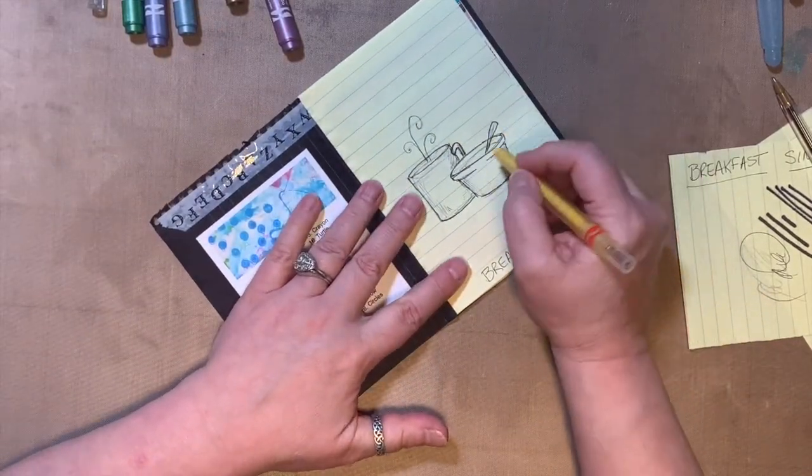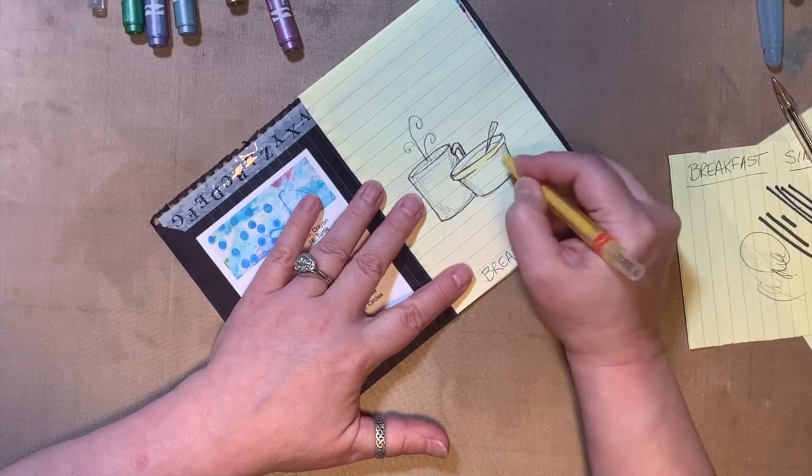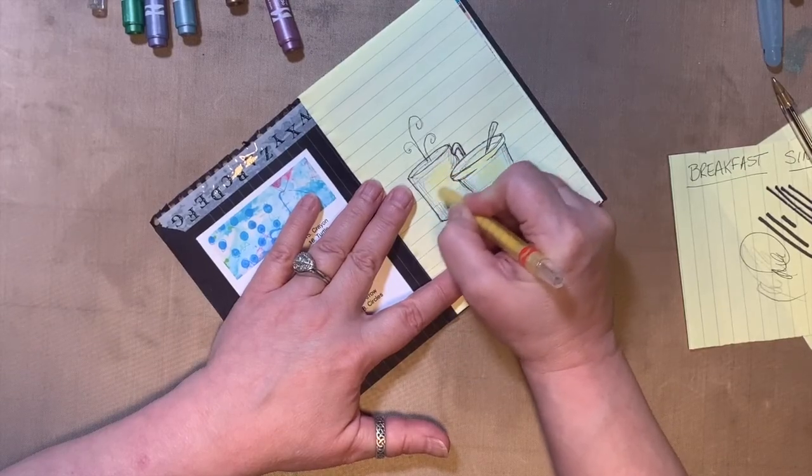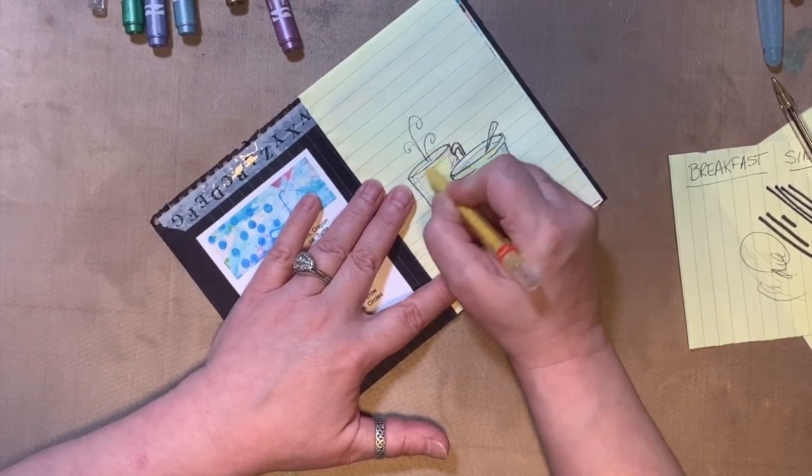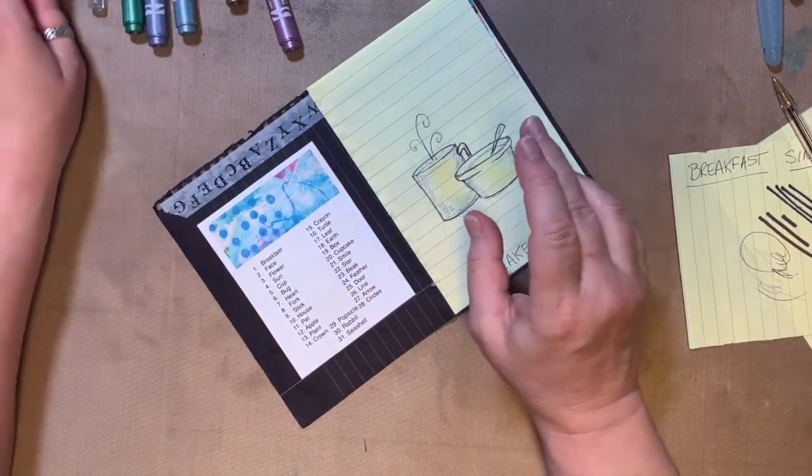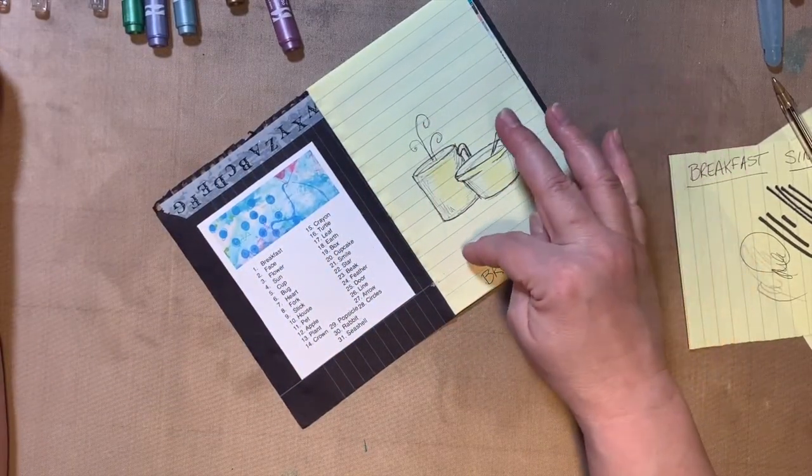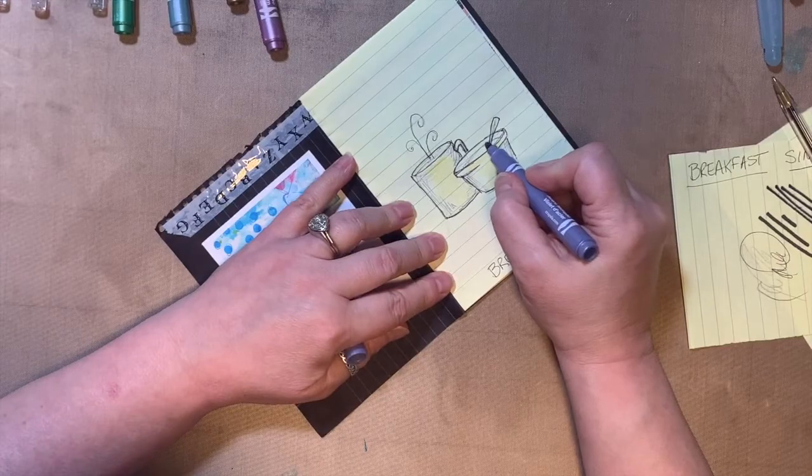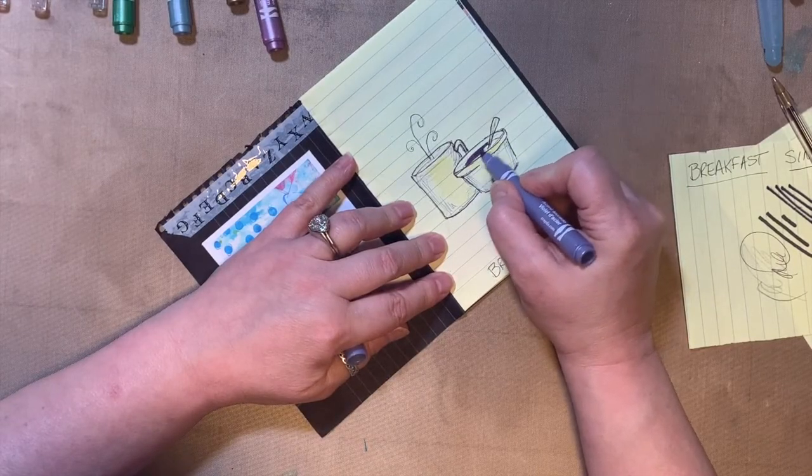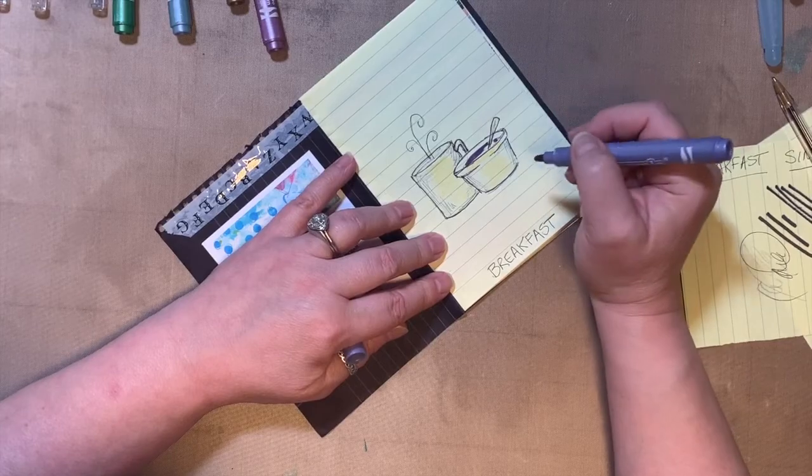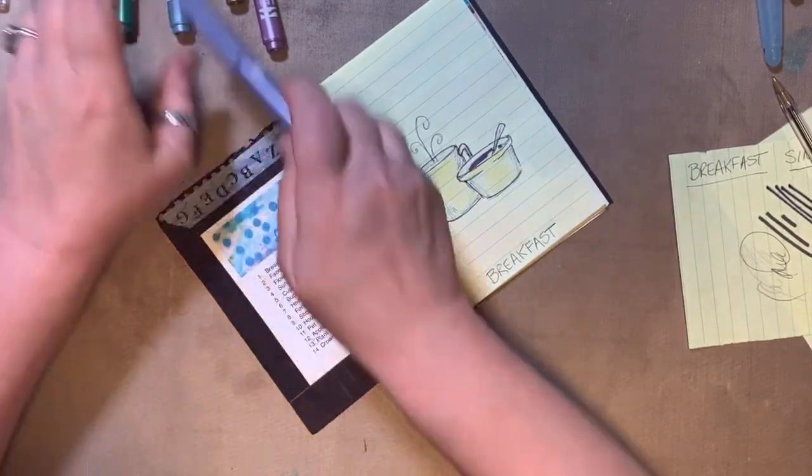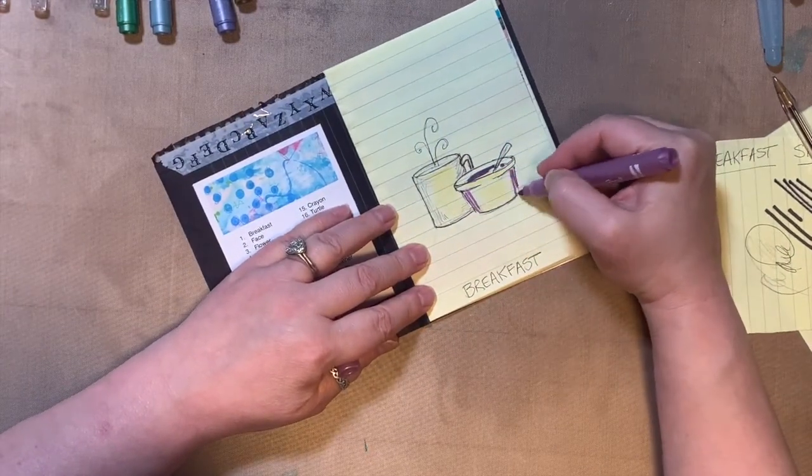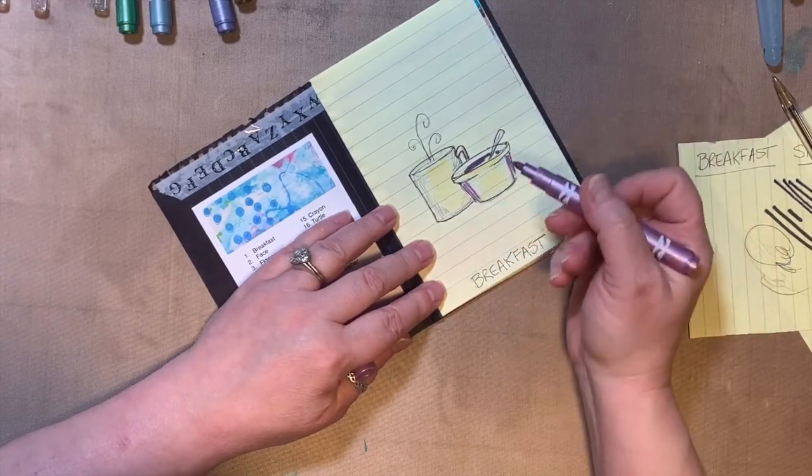The paper is yellow, so I don't need to do too much of this. I also almost never color in the entire drawing when I'm doing these. I just add a little bit of color to emphasize and highlight my drawing, to accent my drawing. I'm using two different colors of purple - this one's warmer than the other one.